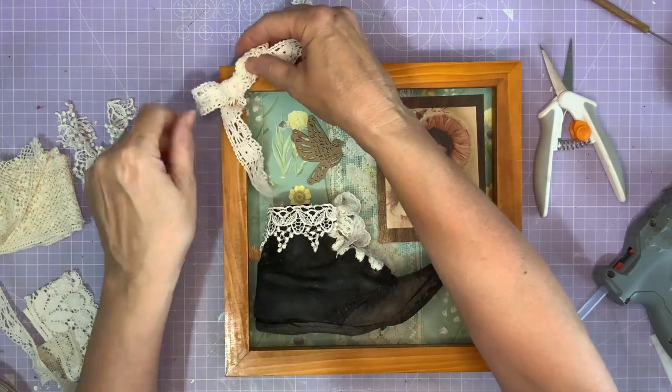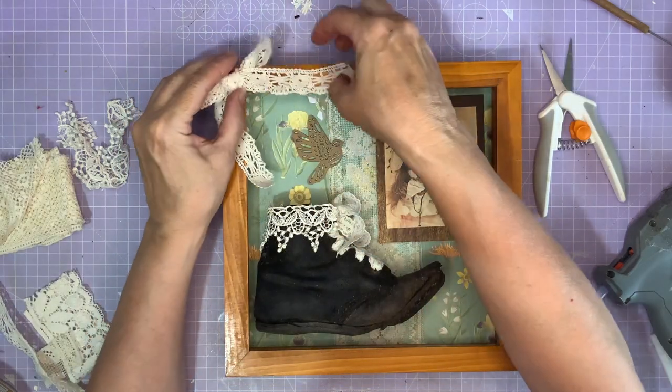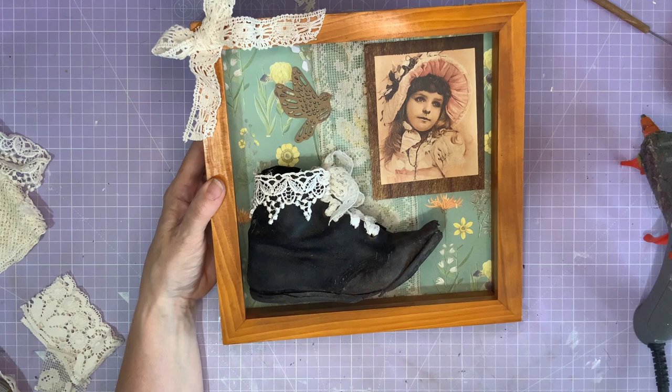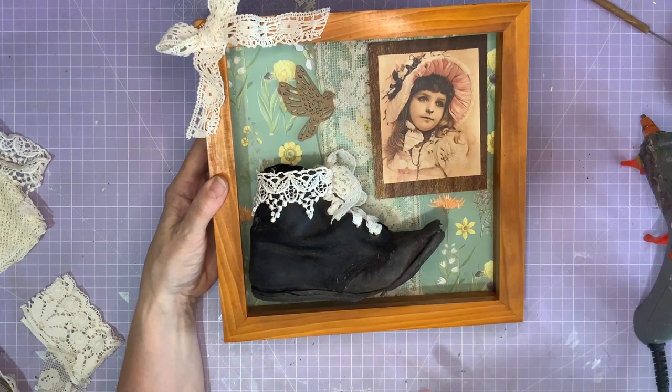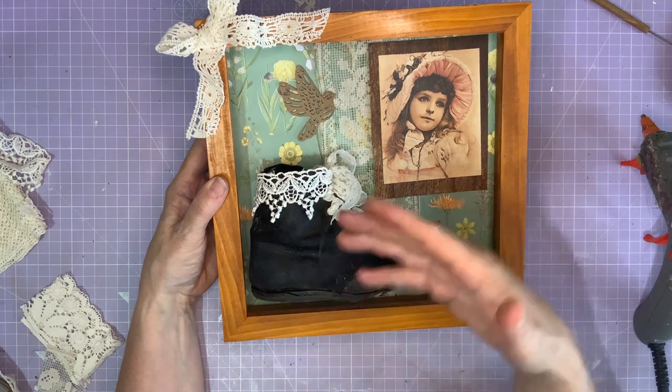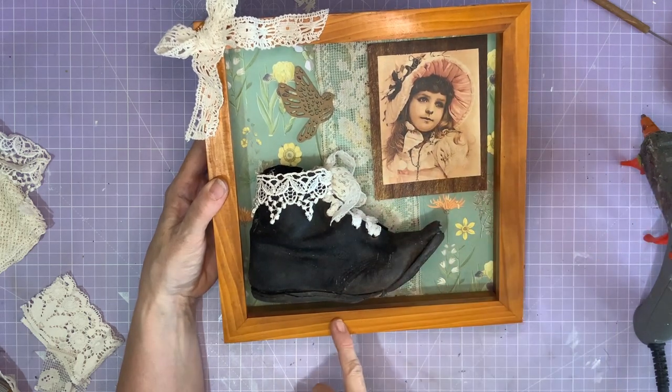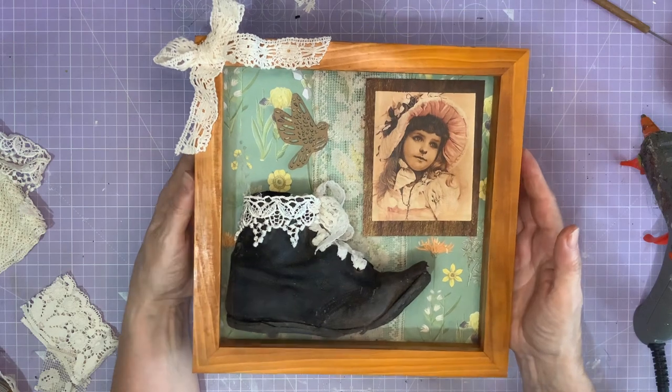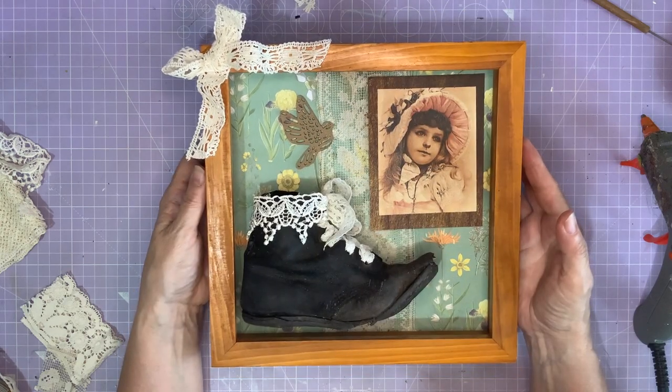So I think I'm going to add a bow to the top there. I think that'll look gorgeous. If you're making one of these and you've got a child shoe, then you could always put a little name plaque here. Or even if this was a shoe that you got of your great grandmas, you could put their name there. Let's have a look what this looks like up on my display.